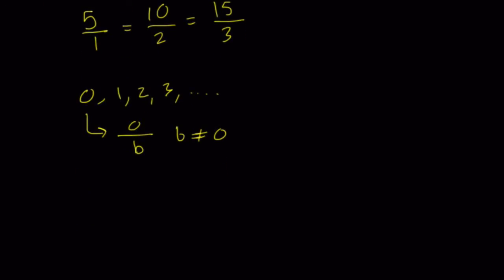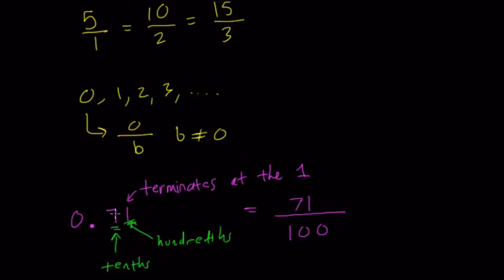Some trickier cases are when you deal with decimals. Any terminating decimal—that means a decimal where the digits end somewhere—can be turned into a fraction. Here, 0.71 terminates at the 1. The 7 is in the tenths place and the 1 is in the hundredths place. This equals 71/100.